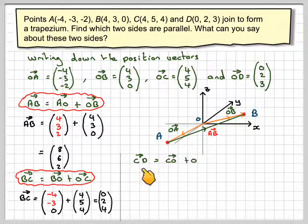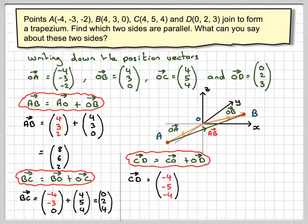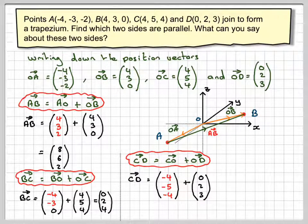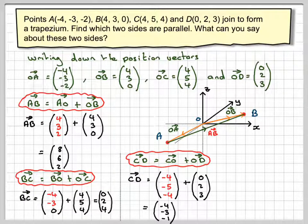Now, repeating it for CD. So we're just going around. CD will be CO plus OD. So we'll change the sign of these. So we're going to get (-4, -5, -4) plus OD, which is (0, 2, 3). Minus 4 plus 0 is minus 4. Minus 5 plus 2, which is minus 3. Minus 4 plus 3, which is minus 1.